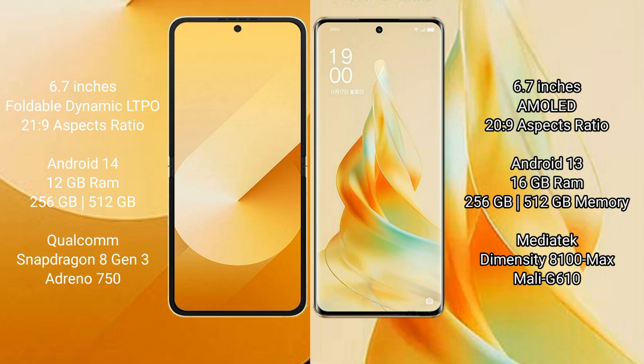Samsung Galaxy Z Flip 6 runs on the Android 14 operating system. Oppo Reno 9 Pro runs on Android 13. Samsung Galaxy Z Flip 6 comes with 12GB RAM and 256GB or 512GB internal storage. Oppo Reno 9 Pro offers 16GB RAM and 256GB or 512GB internal storage.